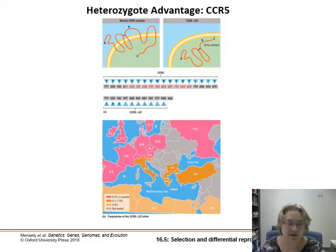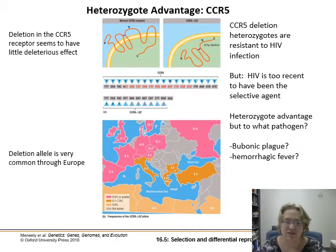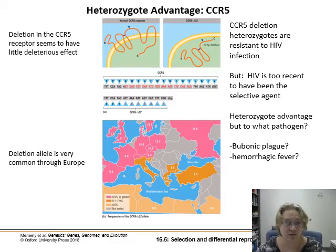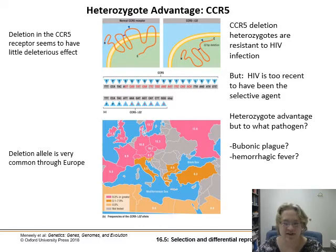Another example is the CCR5 deletion. Having one copy appears to have no major effect, but homozygous individuals are resistant to HIV infection. Since HIV is too recent to have been the selective agent, something else — possibly the bubonic plague or an unidentified hemorrhagic fever — must have provided the selective pressure maintaining this deletion at high frequency in the population. At some point there was a pathogen where having this deletion was a definite advantage.